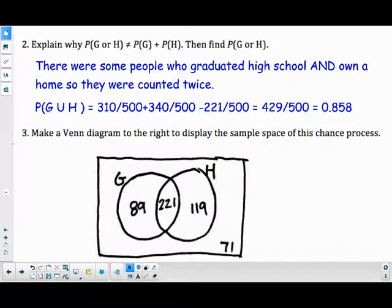So if you're going to do the probability of graduate or homeowner, you can do the probability of graduate, the 310 out of 500, plus the probability of homeowner, but then subtract the overlap. So you make sure you don't double count it, so 429.